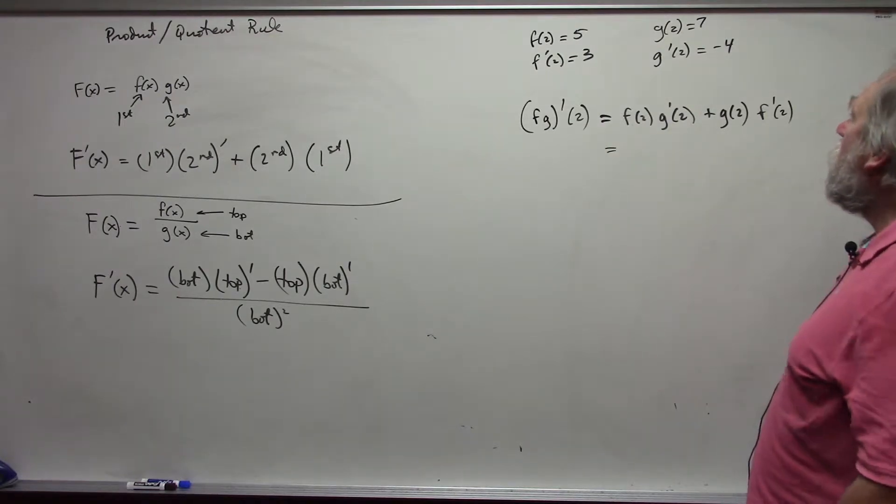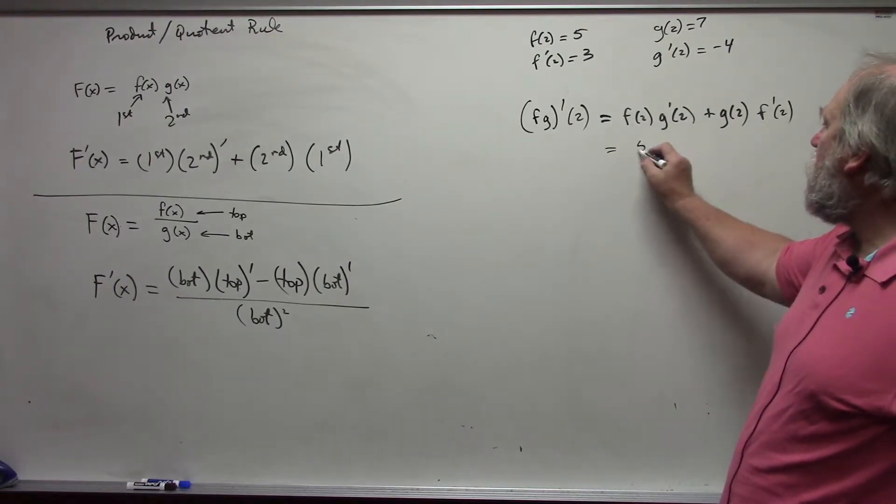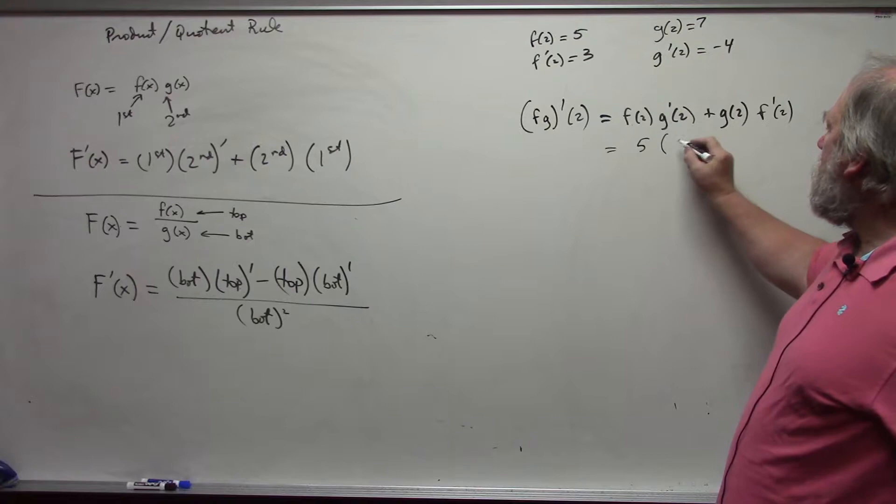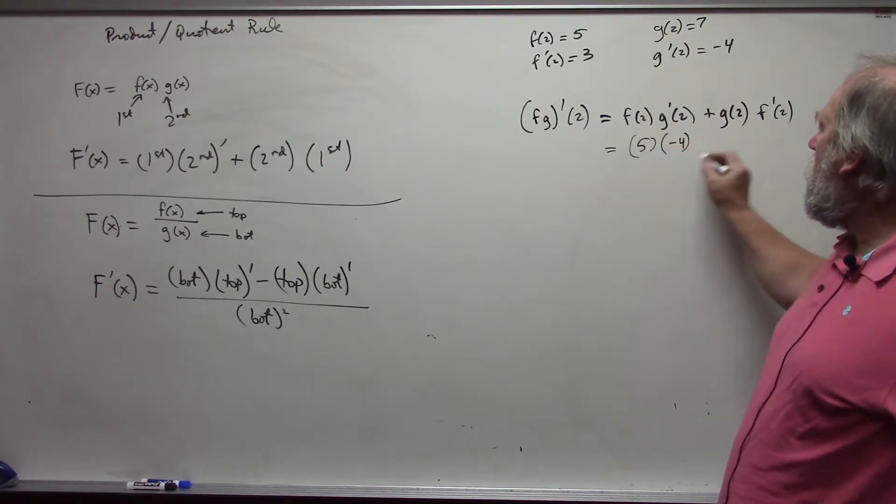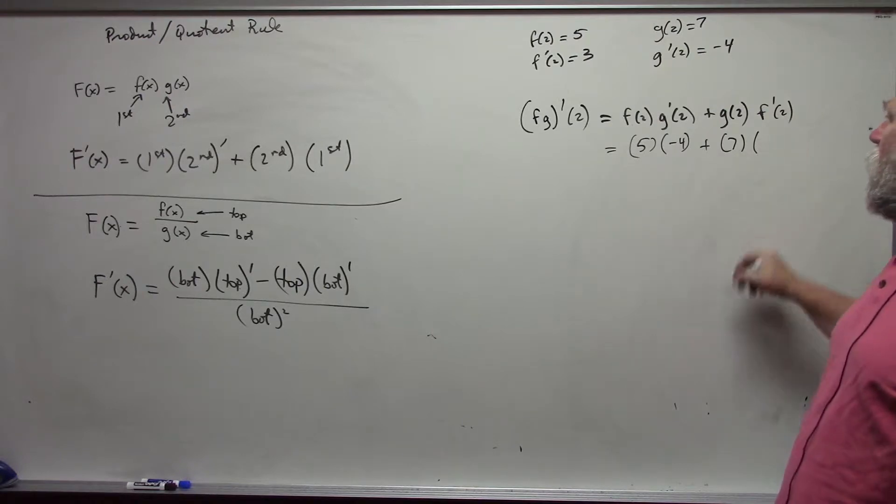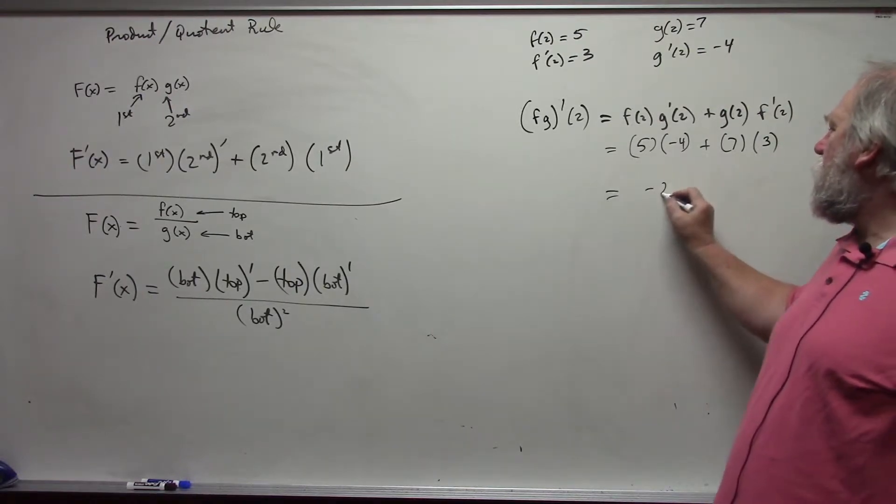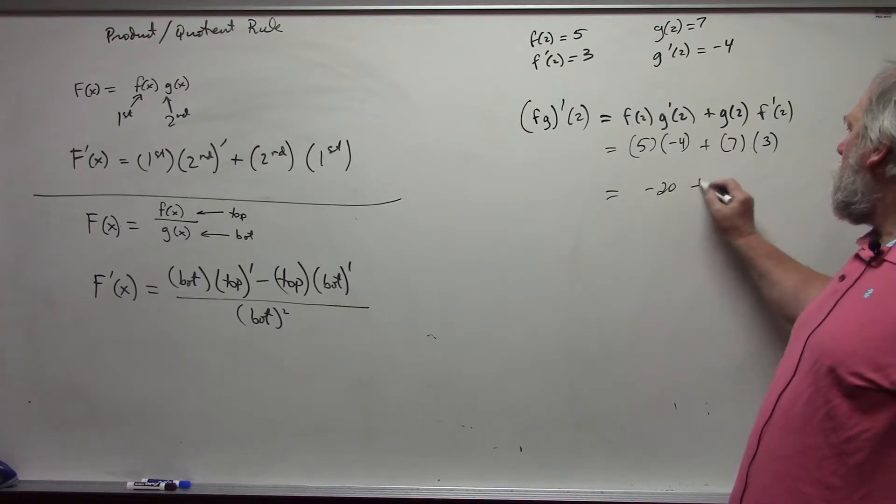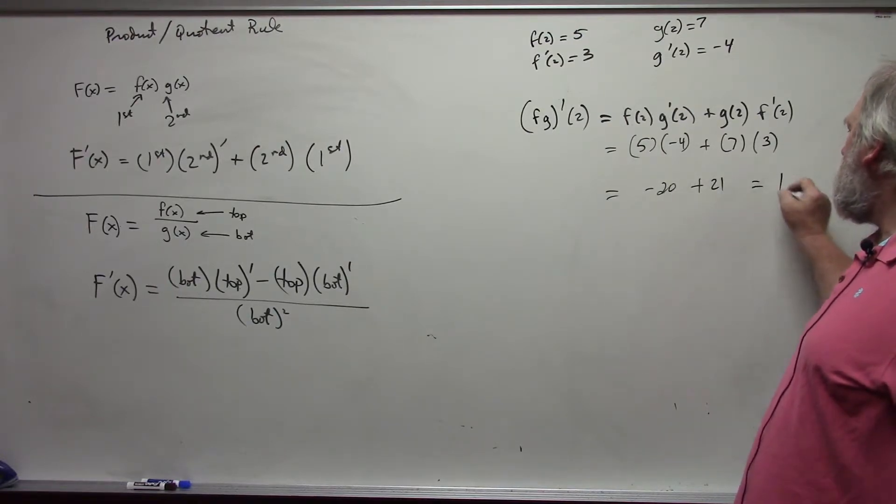Now I'll put in my numbers, so I get 5 times negative 4, plus 7 times 3, and so I get negative 20 plus 21, which is 1.